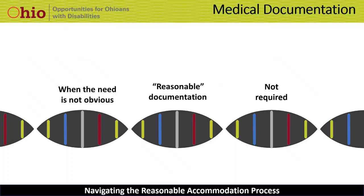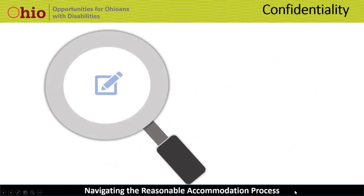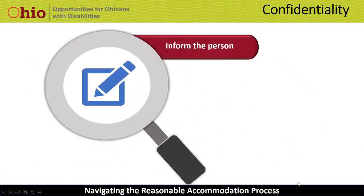Whether you are asking questions or obtaining documentation, you will be handling sensitive and personal medical information. It's important to inform the person that all medical information shared with the employer will be kept confidential — this includes information from the request itself, any answers to questions you ask, and all information received in documentation. The EEOC provides guidance on how medical information should be handled, including recording medical information in its own file separate from general personnel files, and storing this information in separate filing cabinets or electronic databases, because not all Human Resources staff are permitted to access medical files.